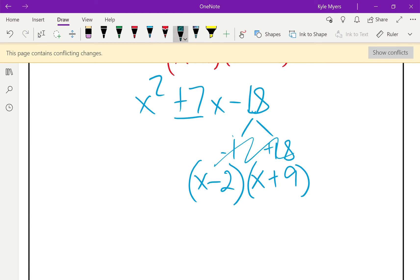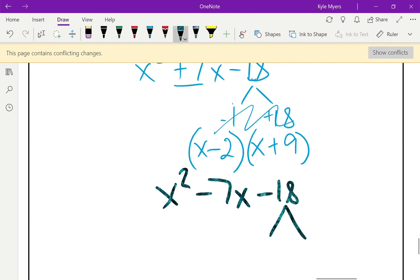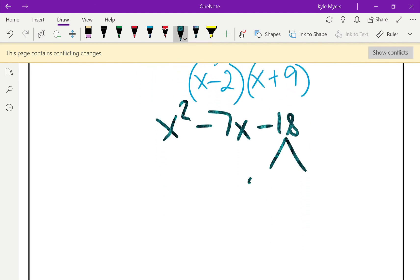And then for the last one here, got X squared minus 7x minus 18. So, then, same thing. I'm going to skip the 1 and the 18 and go straight to the 2 and the 9. So, 2 and 9 here. Except this, I'm going to make the 9 negative and the 2 positive.